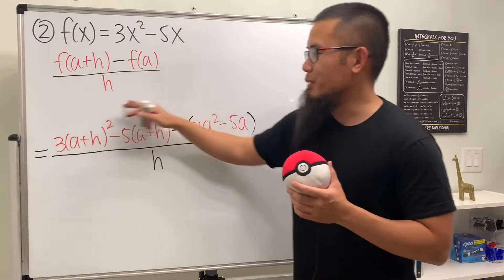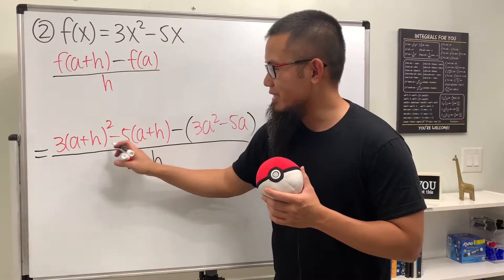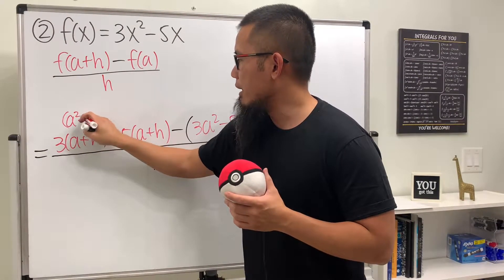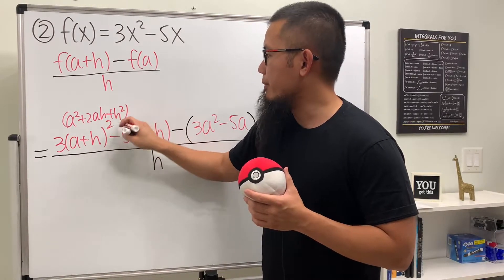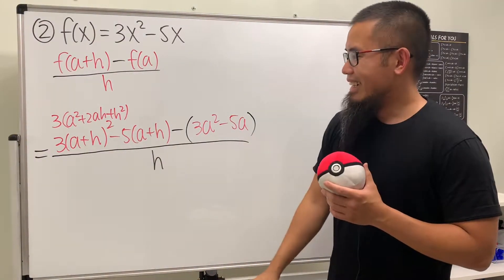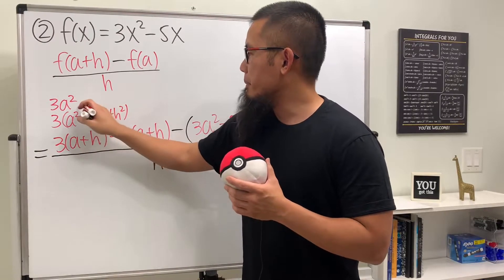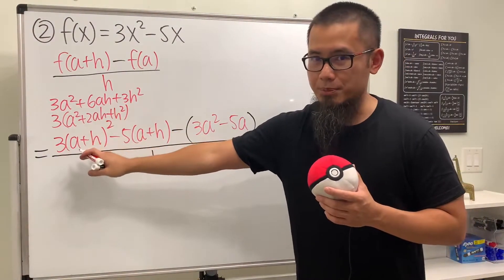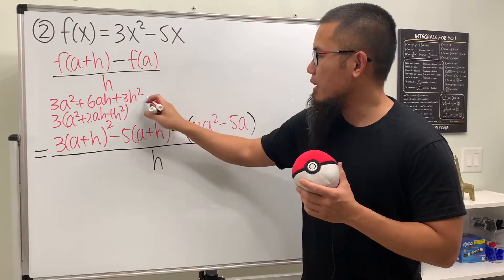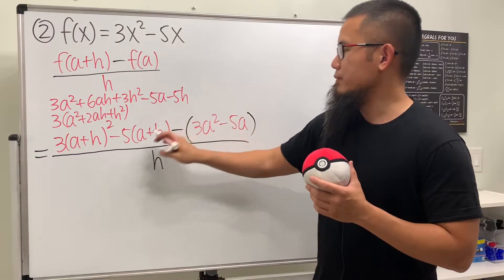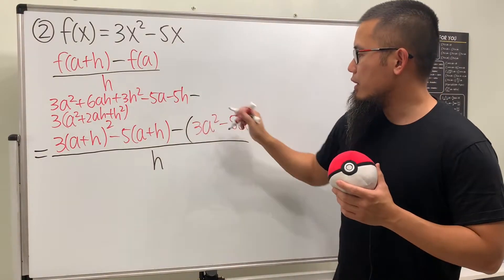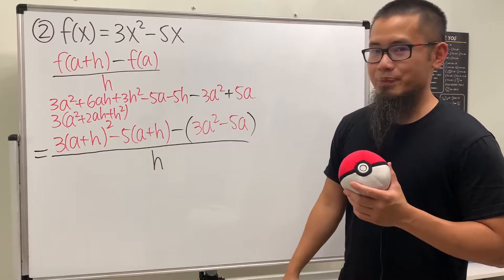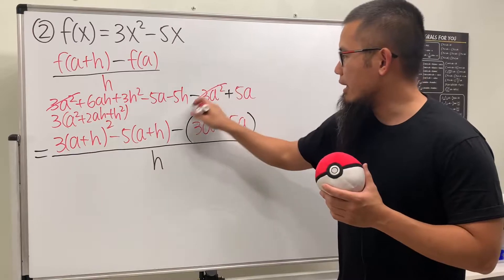Let's work this out. Expanding (a+h)² gives a² + 2ah + h². Distributing the 3: 3a² + 6ah + 3h². Then distributing -5: -5a - 5h. Distributing the negative for f(a) gives us -3a² + 5a.